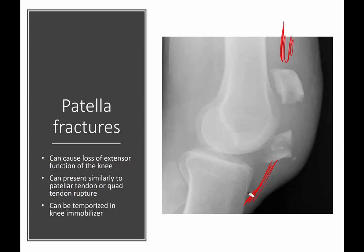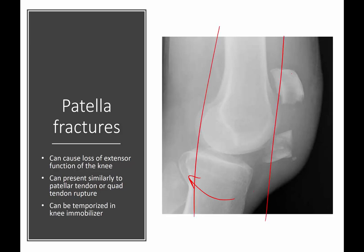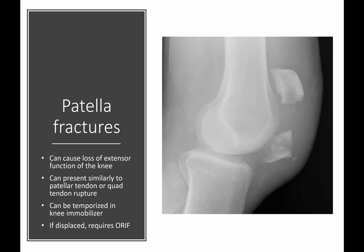It can be temporized in a knee immobilizer — if you hold the leg straight and prevent the tibia from going back, the patient can probably walk around on that. But it's not a great long-term solution. If it's displaced like this, it requires open reduction and internal fixation — taking the fragment, bringing it back up, and fixing it with pins or wire to re-establish the extensor mechanism from the thigh down to the proximal tibia.